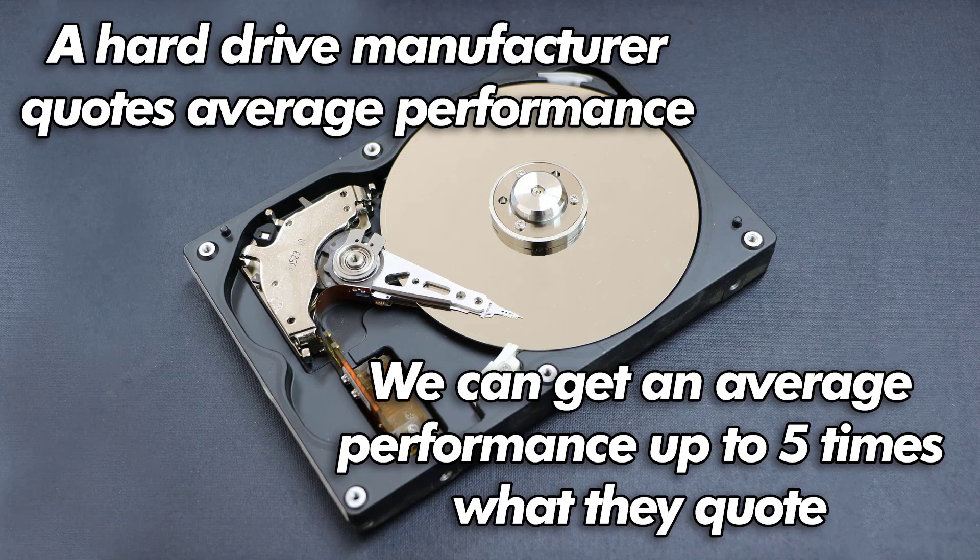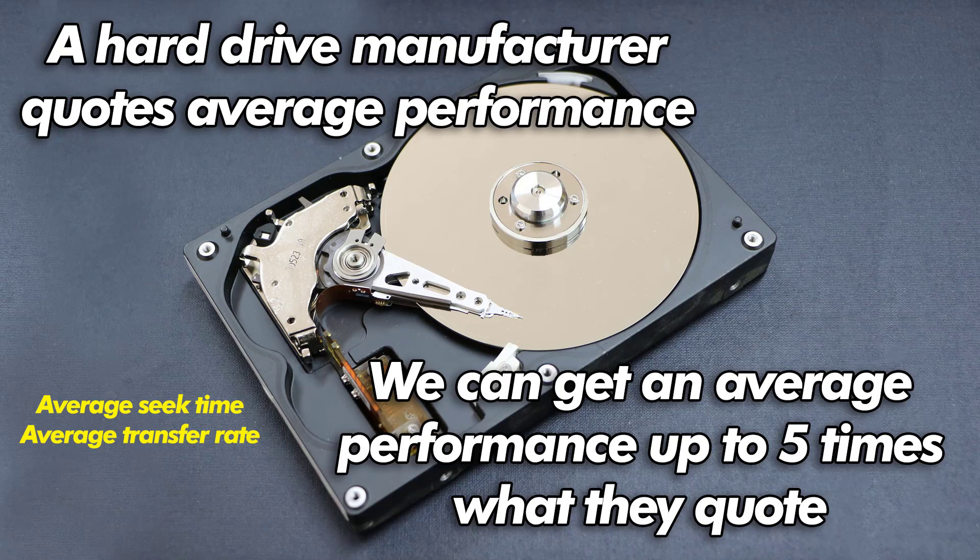When a hard drive manufacturer quotes performance for their hard drive, that is average access times and average transfer rate — that is exactly what it is. The average performance that they expect across all the machines that the hard drives are installed into. This is based upon the average file being positioned right in the center of the platter, which gives you the average of the overall movement of the hard drive's head and the average of the transfer rates. You can settle for average performance or you can aim for a PC that performs faster than you would expect it to. It's part of tweaking your PC for maximum performance.